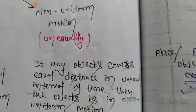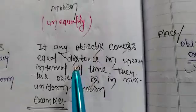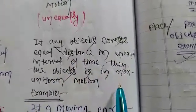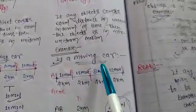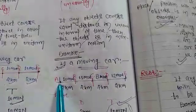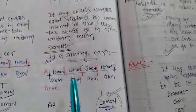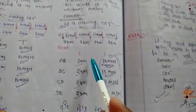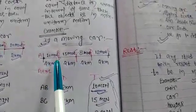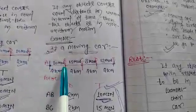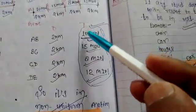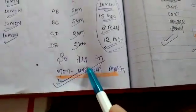To understand non-uniform motion: if any object covers equal distance in unequal interval of time, then the object is in non-uniform motion. Suppose we take a moving car starting from A. Distance A to B is 2 km, B to C is 2 km — distance is equal in amount. But the time taken is 10 minutes, then 15 minutes, 8 minutes, 12 minutes — the interval of time is different. So the car is in non-uniform motion.